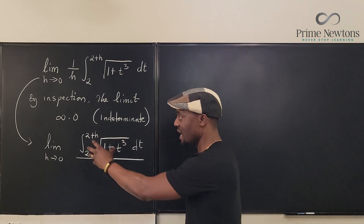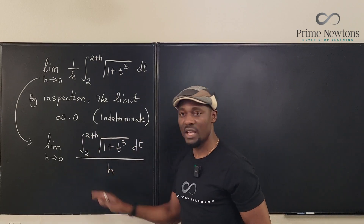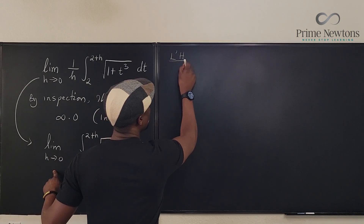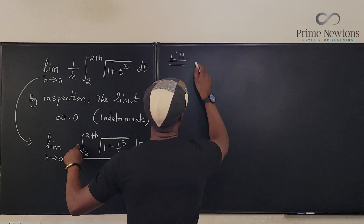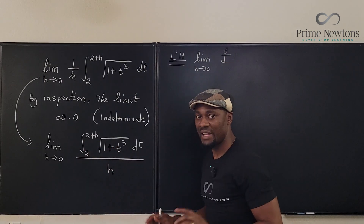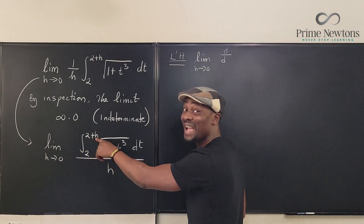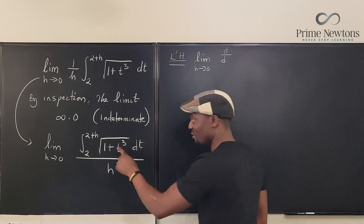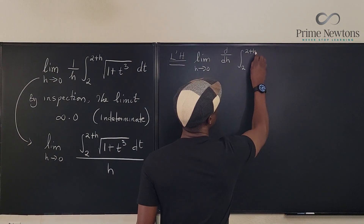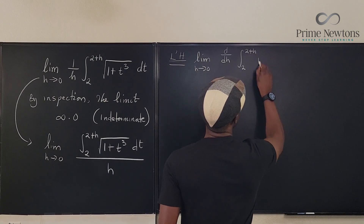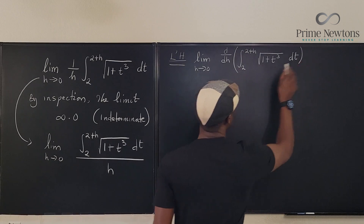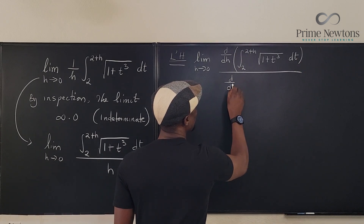What does L'Hôpital's rule say? It says differentiate the top and differentiate the bottom and try to take the limit — you should get your answer. So by L'Hôpital's rule, this is going to be equal to the limit as h approaches zero of the derivative. What are we differentiating with respect to? h is our variable, so we differentiate with respect to h, not t. It's going to be d/dh of the integral from two to two plus h of the square root of one plus t cubed dt, divided by d/dh of the denominator.